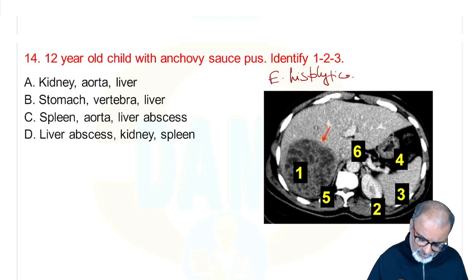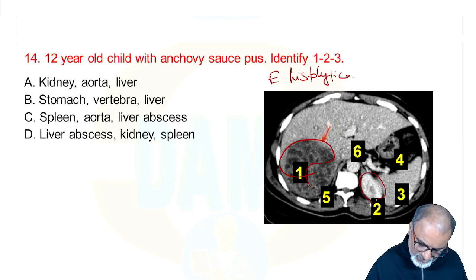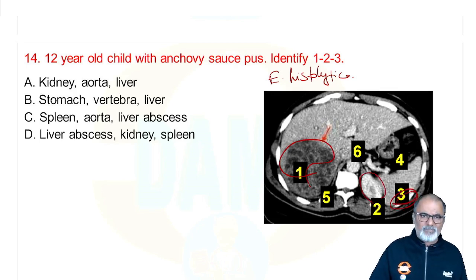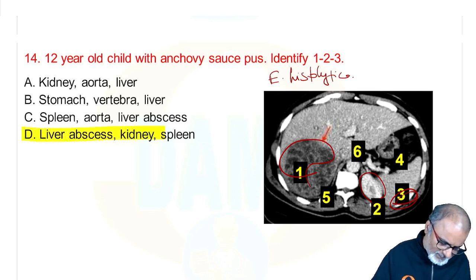Identify structures 1, 2, 3. One is liver — this is liver. Two is kidney, and the third one is spleen. It is a liver abscess with kidney and spleen visible.